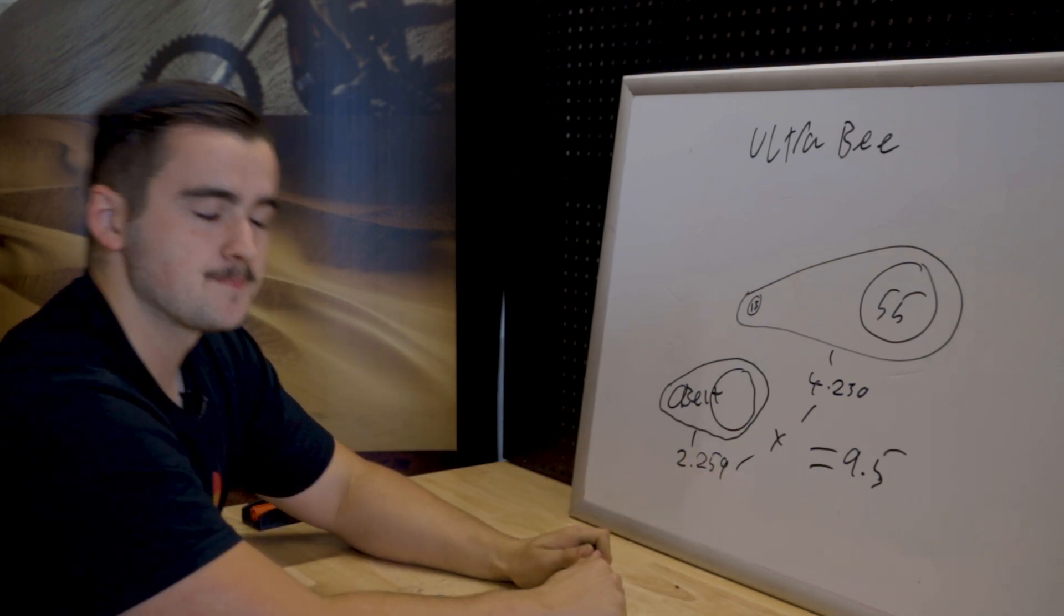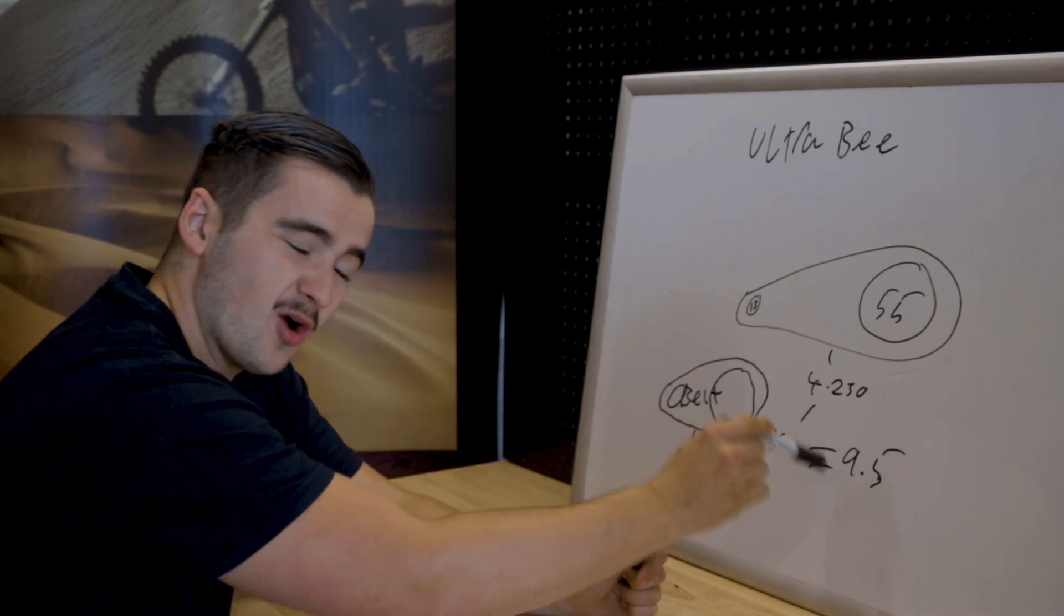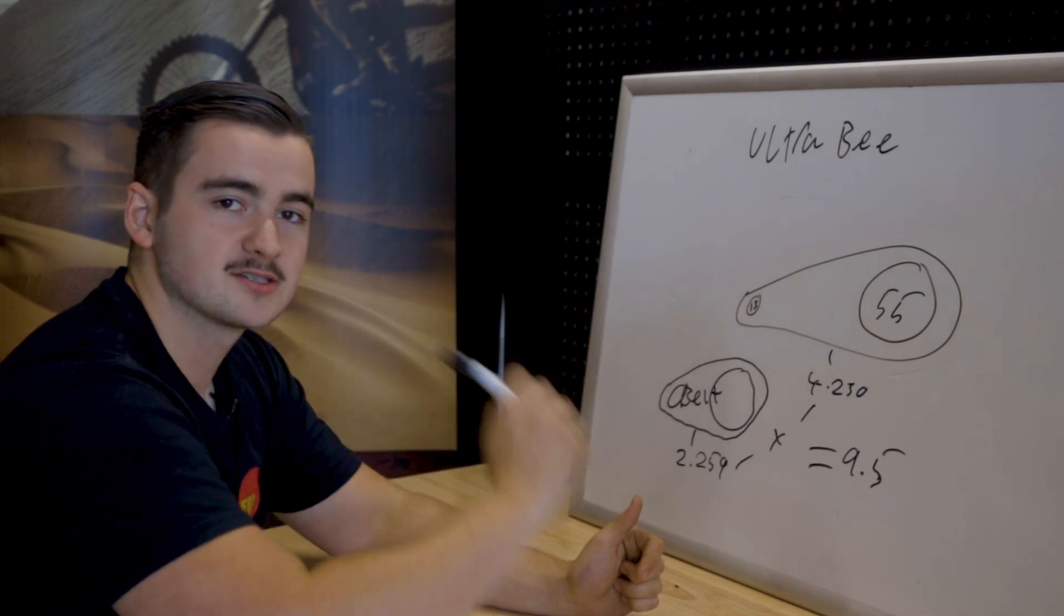So there you go. So to bring it full circle that means that our motor is turning 9.5 times to turn the rear wheel once.